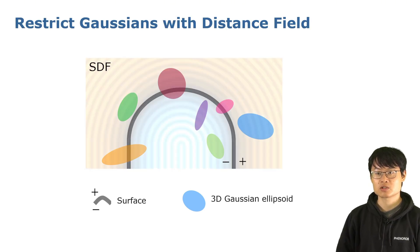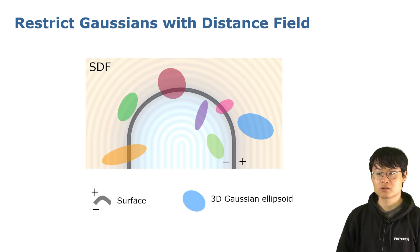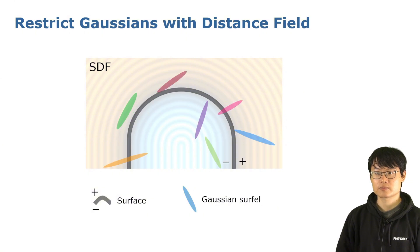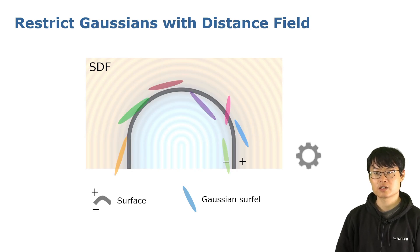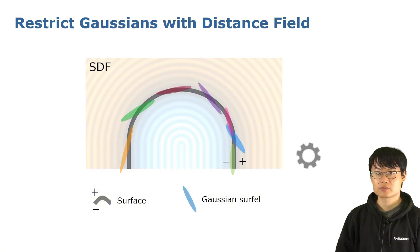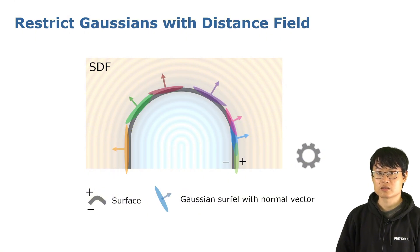With sparse training images, the optimization may converge to a local minimum, where the rendering is photorealistic but geometrically incorrect. To address this, we use the distance field to restrict the Gaussian primitives. We use Gaussian surfaces instead of the original 3D ellipsoids for better surface representation. Intuitively, we align the Gaussian surface with the SDF zero isosurface, and the surface normals with the SDF gradient direction to achieve a geometrically accurate radiance field.